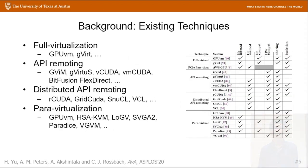Many existing systems virtualize accelerators. Most of them are GPUs, and they use different techniques. Most of them require massive engineering effort, and all of them compromise at least one of those virtualization properties. Our paper summarizes those virtualization systems in the related work section — please refer to our paper and related citations for details.